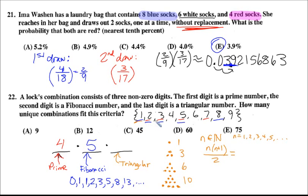The triangular numbers in this set, the universe, is one, three, and six. There are three possibilities, three choices.